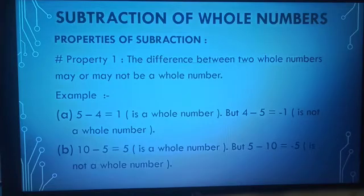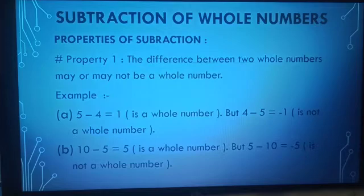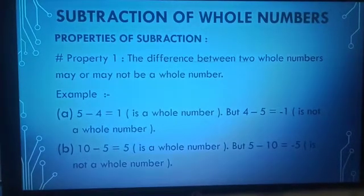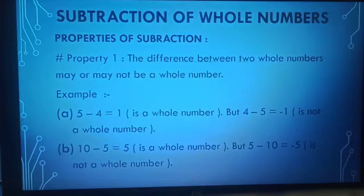Let us discuss another example. 10 minus 5 is equal to 5, which is a whole number. But if we do 5 minus 10, this is equal to minus 5. Minus 5 is not a whole number.